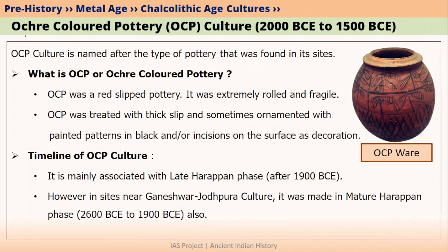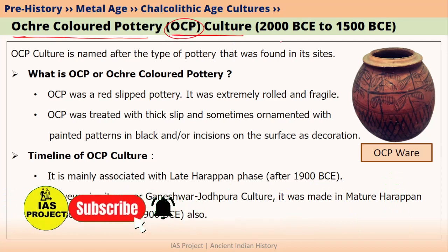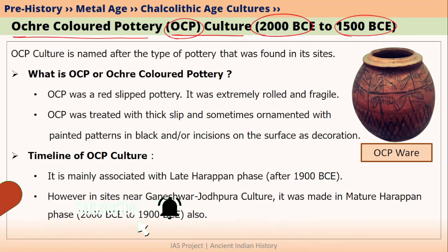Let us talk about Ochre Coloured Pottery, which is also called as OCP Ware. OCP culture started somewhere around 2000 BCE and it lasted up to 1500 BCE.